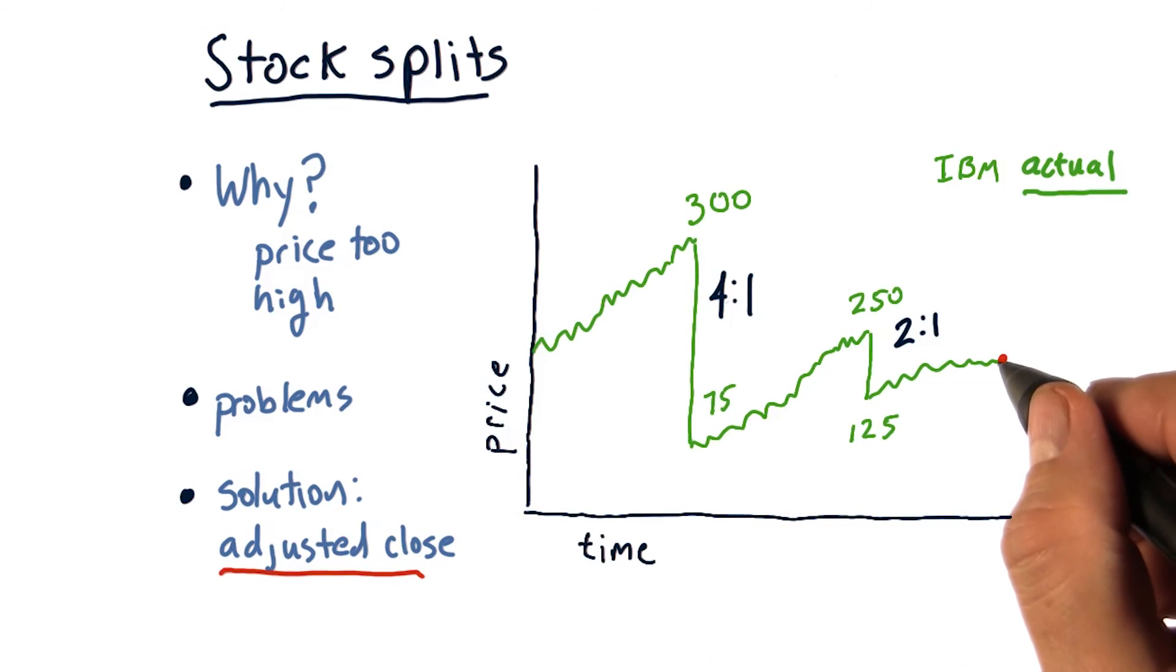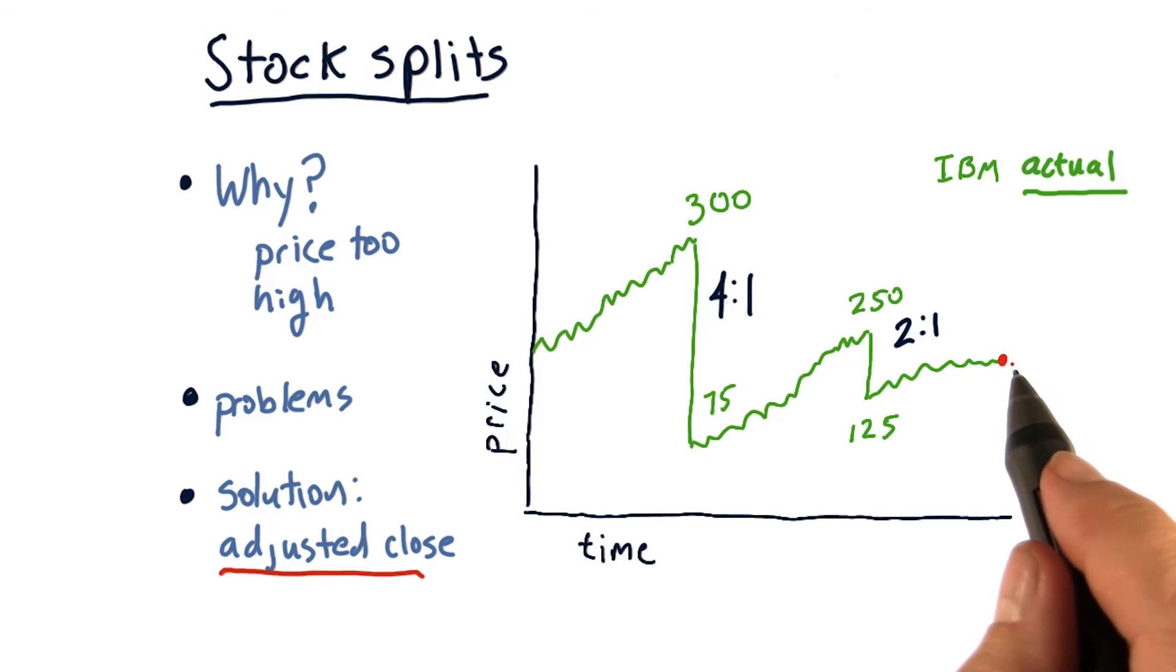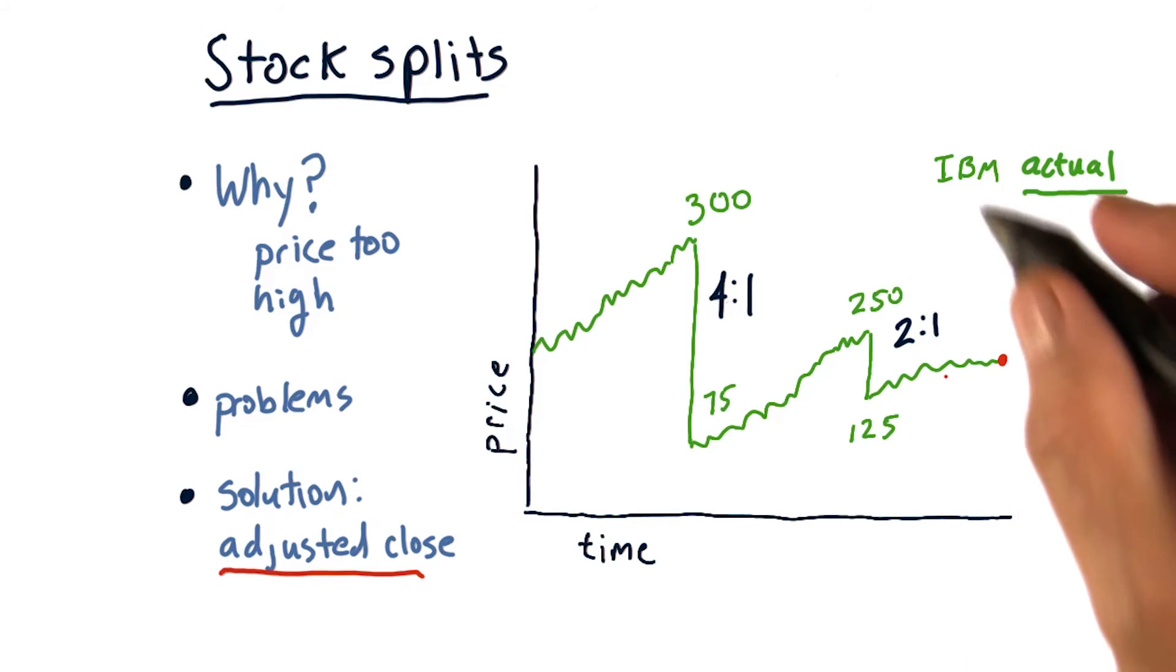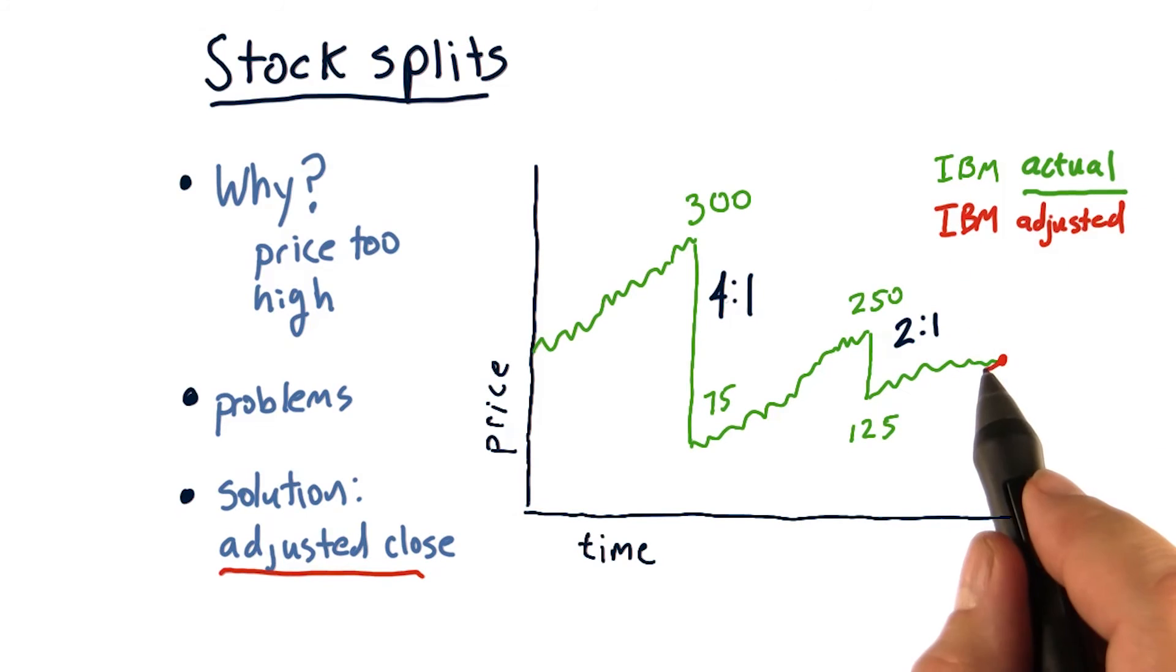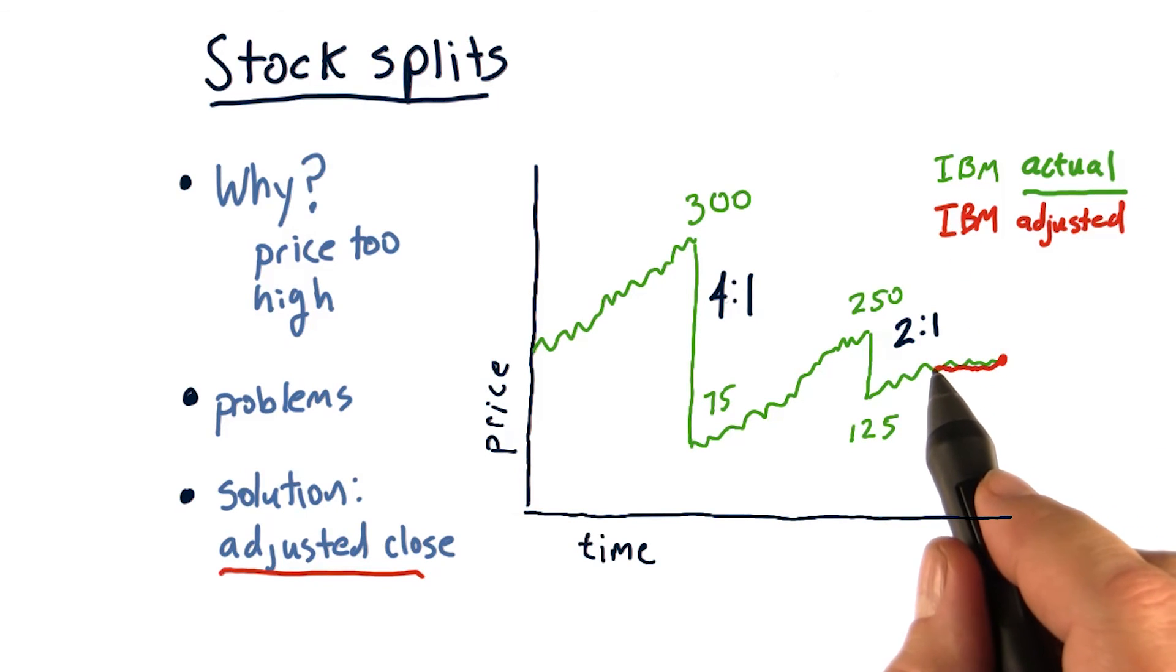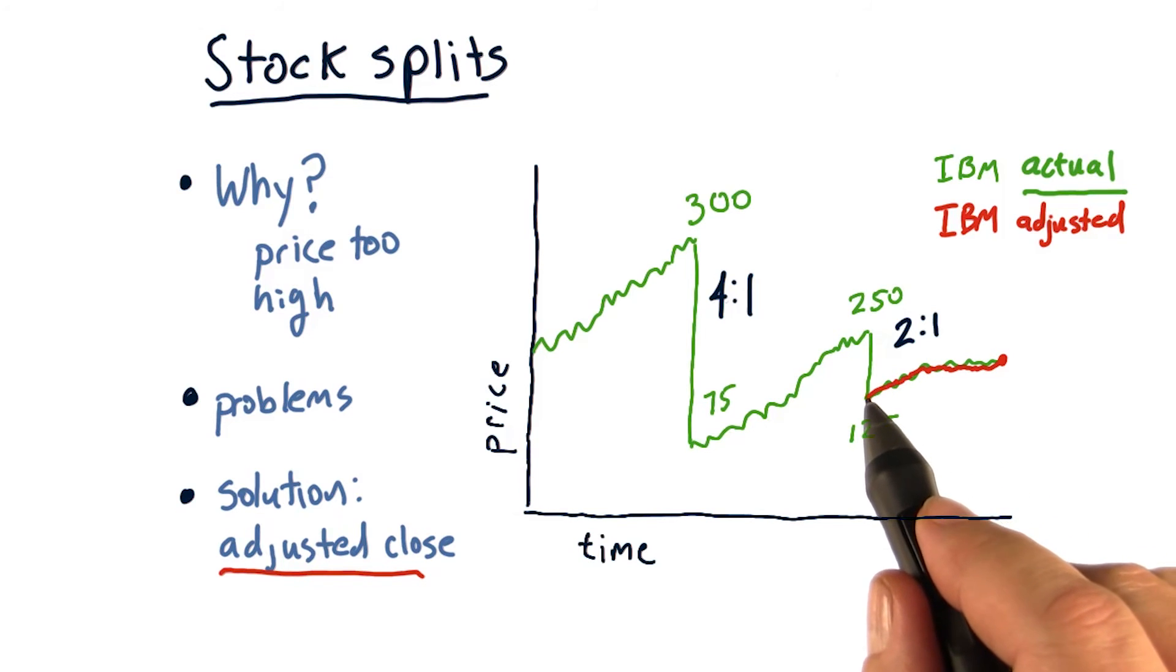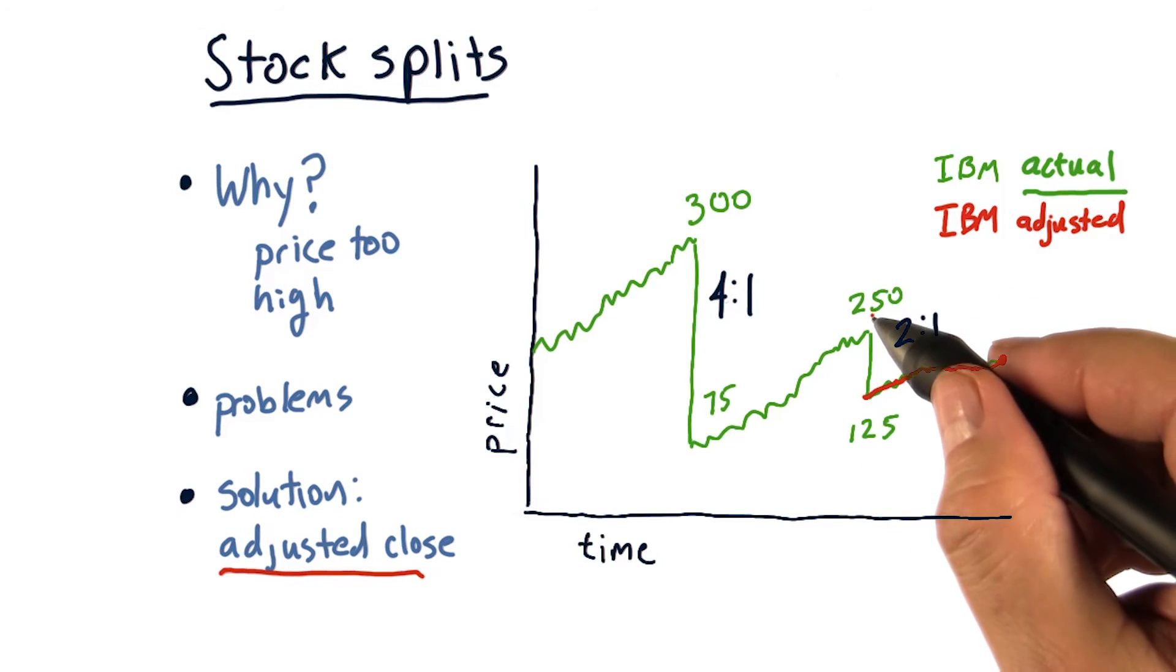Here's how it works. The first thing to point out is that at the very last day, in other words today, adjusted close and actual close are always the same. Now we track back in time, and adjusted close and actual close are exactly the same. But then, on this day, when we see this two to one split,